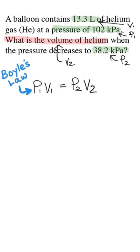I need to do some rearranging because I want to solve for the unknown, which is V2. I need to get rid of the P2 on this side and get it over to the other side. So I'll divide this side by P2 to cancel it. Whatever I do on this side of the equation, I have to do to the other side.